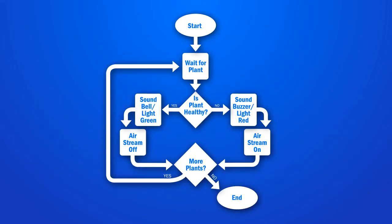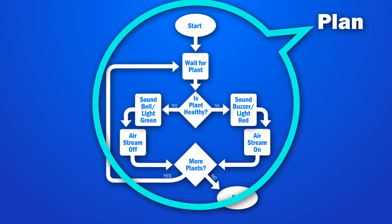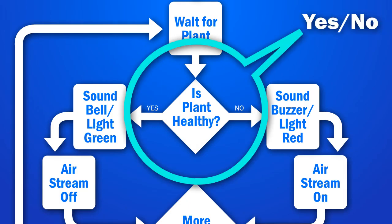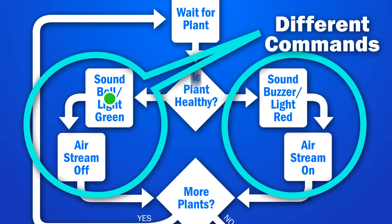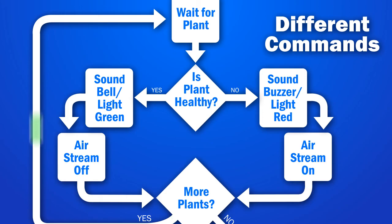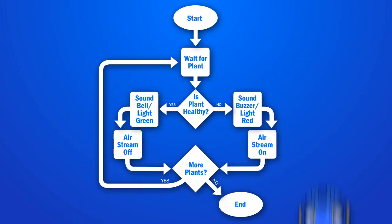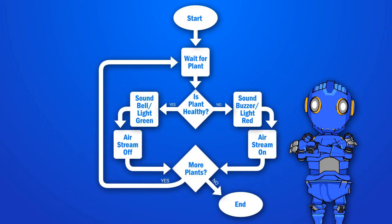Robots think by following a plan. They ask themselves simple yes or no questions and run different sets of commands depending on the answers. These decision-making plans can be illustrated and followed with flowcharts.